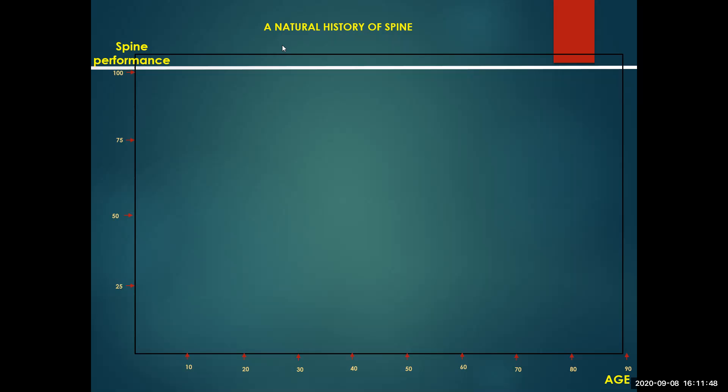Now, in this slide, you see the natural history of the spine. Obviously, when we are born, the spine has very little function because it's not coordinated. And obviously, hopefully when we die, when we are 100 years old, after a good life, obviously the spine has no function, meaning that it starts at zero and it goes to zero. But just for understanding, when do you think the maximum performance of the spine is? What age?